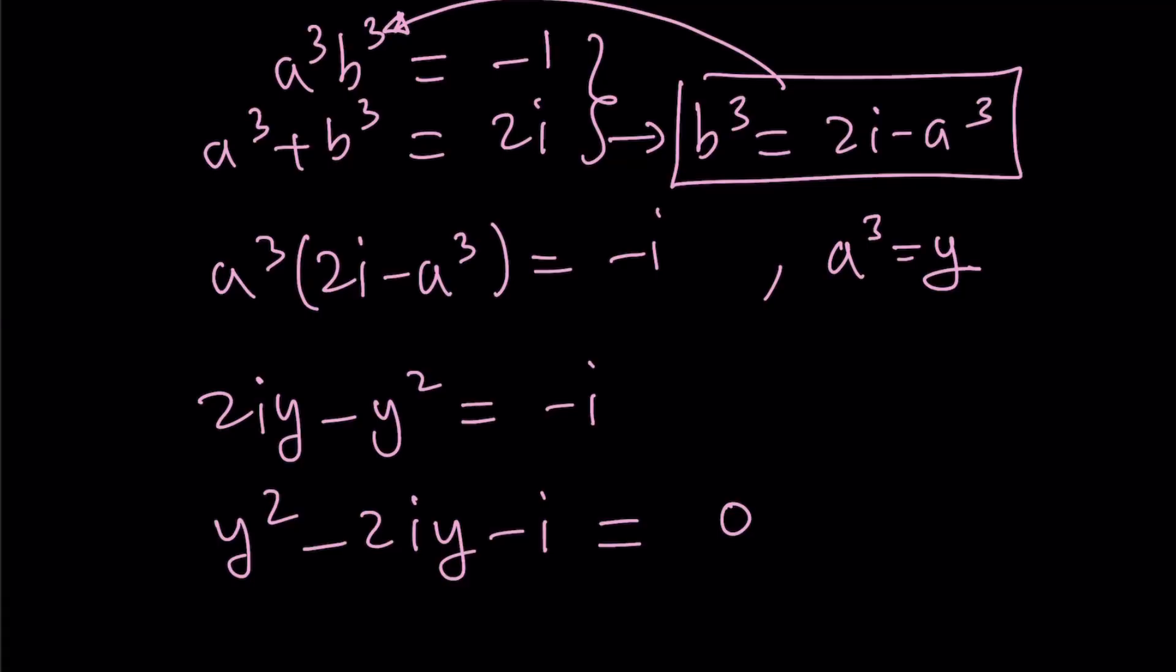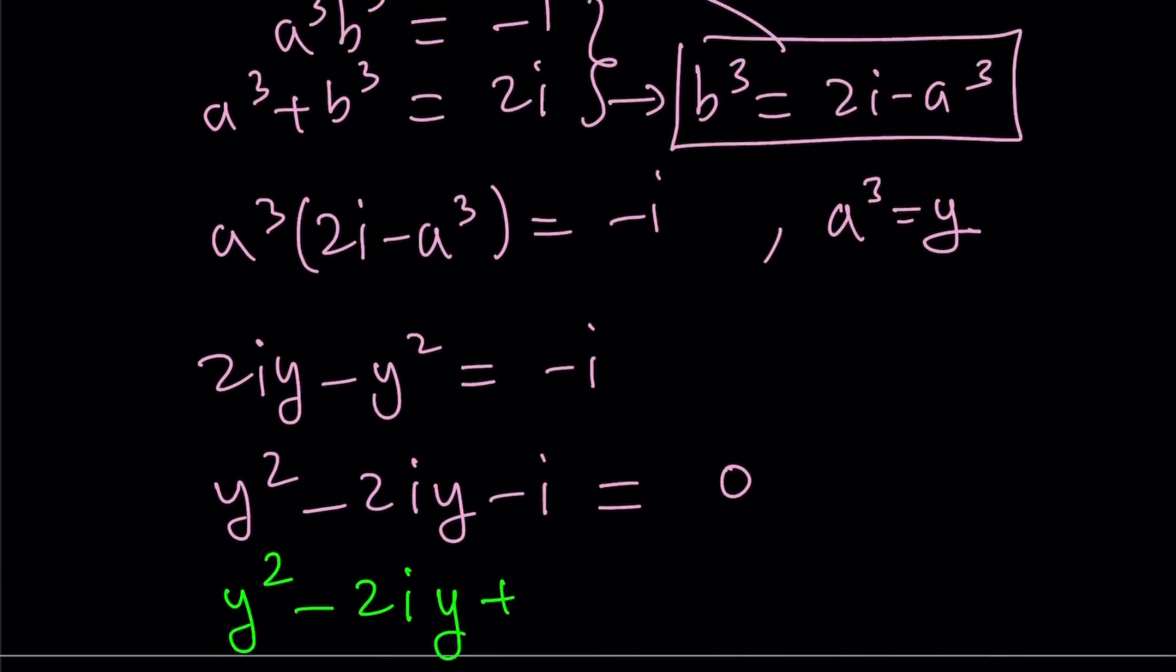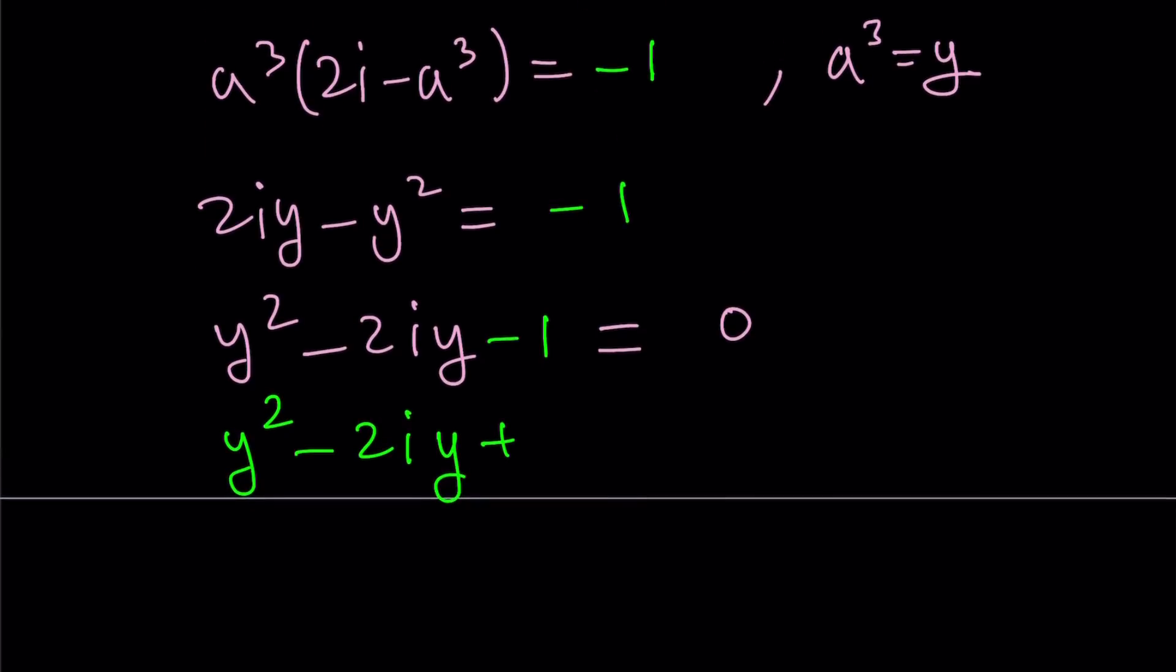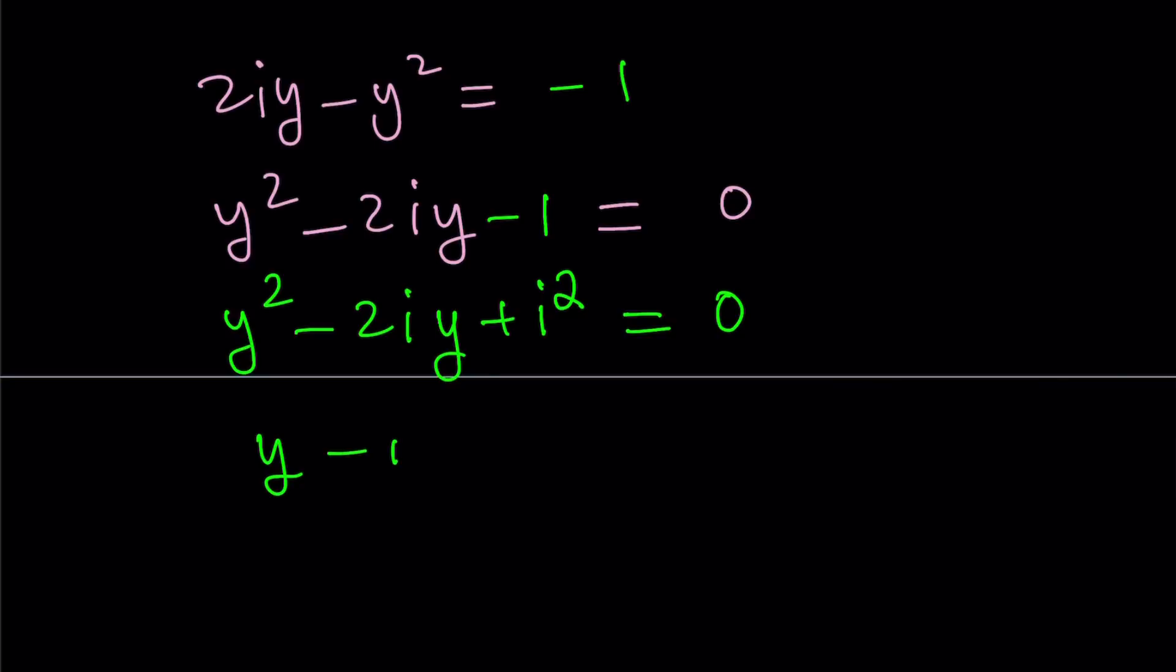Now at this point, you could definitely use the quadratic formula, but I want to use something smarter or nicer, something cool, and that is writing negative 1 - wait, that's not supposed to be i, that's supposed to be negative 1. Okay, so I'm going to replace negative 1 with i squared. And now this becomes a complete square. Isn't that cool? We can write it as y minus i squared equals 0. And from here, y equals i. But we're not looking for y, we're looking for x.